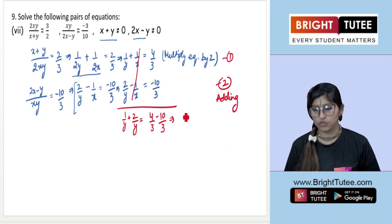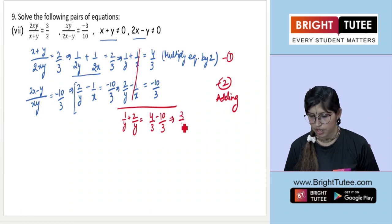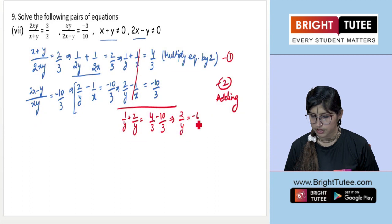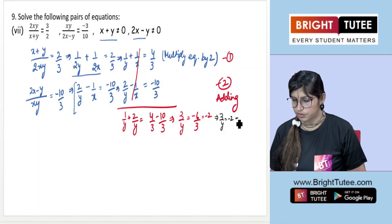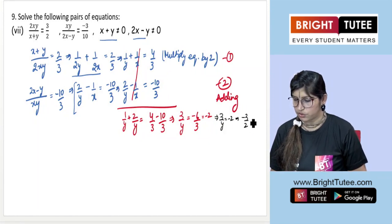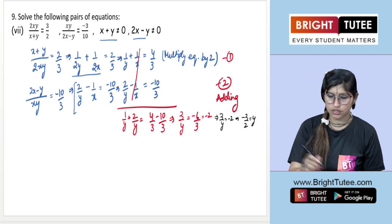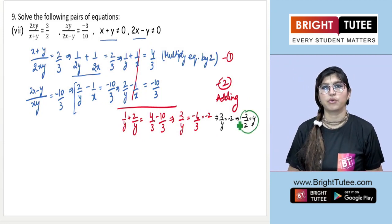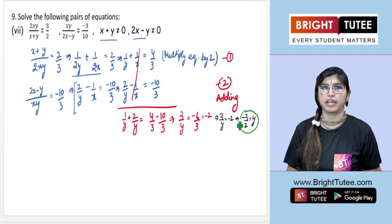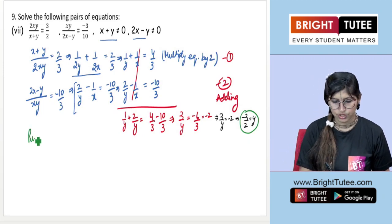So 3/y equals 4 − 10 over 3, which is −6/3, which equals −2. Therefore 3/y = −2, which gives y = −3/2.